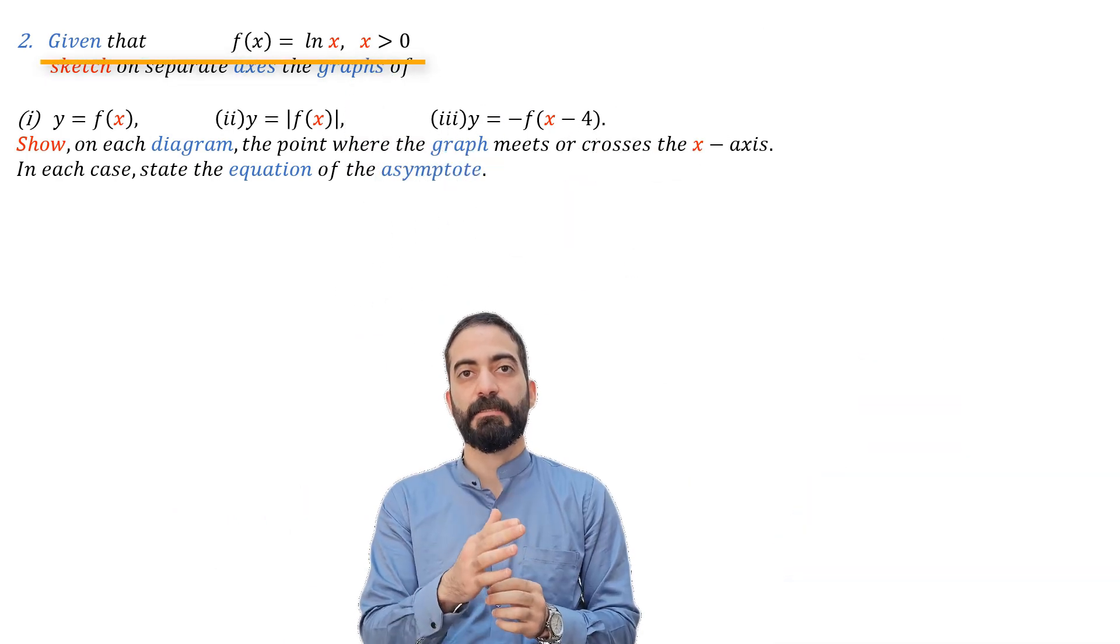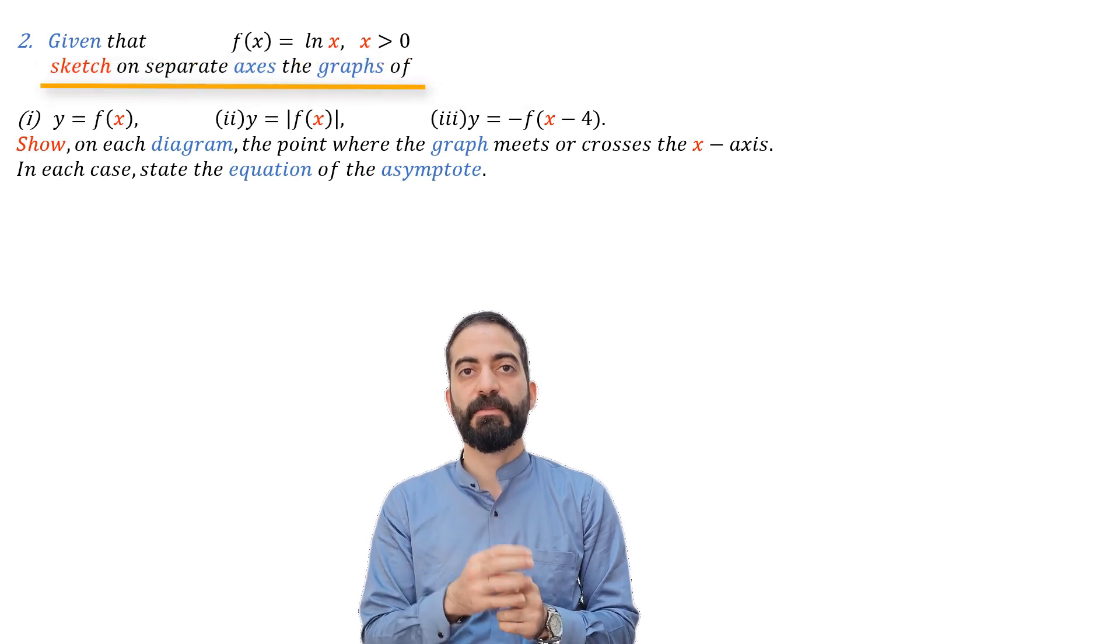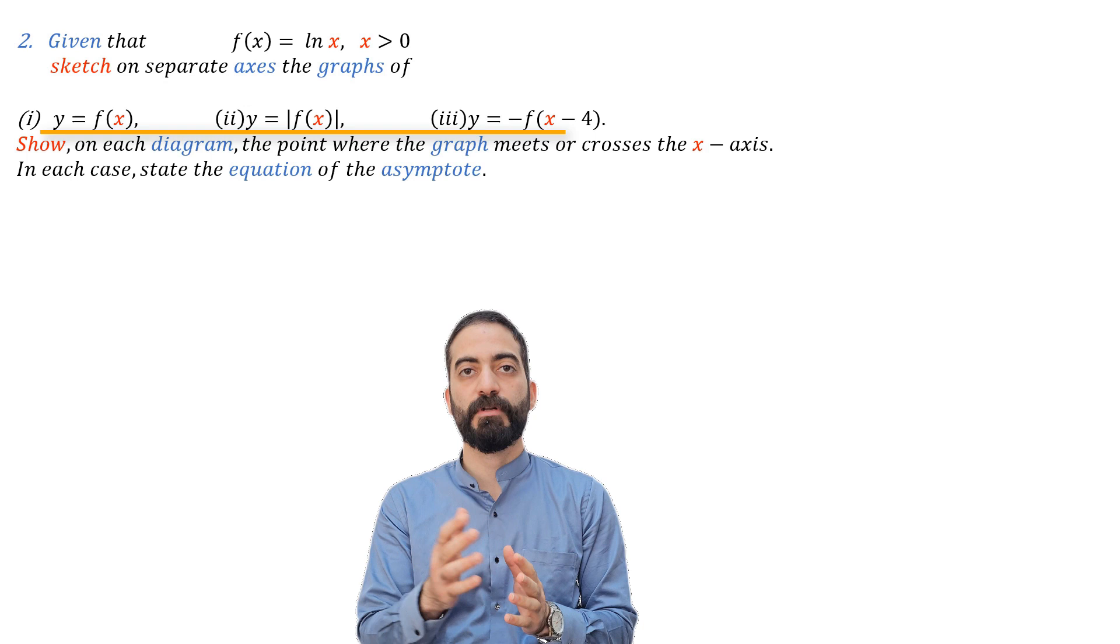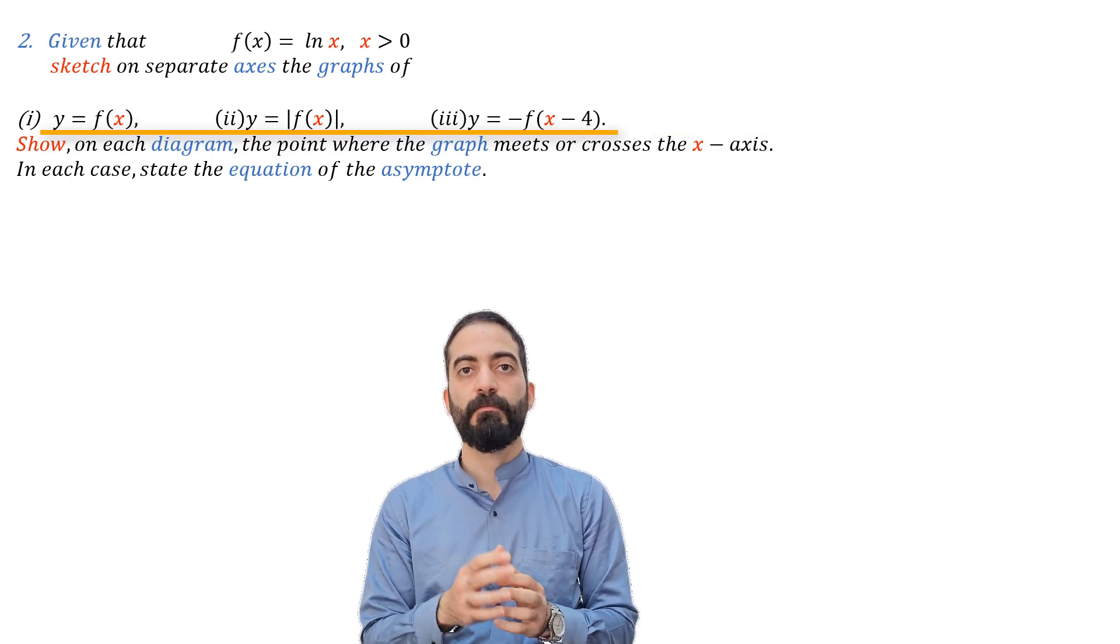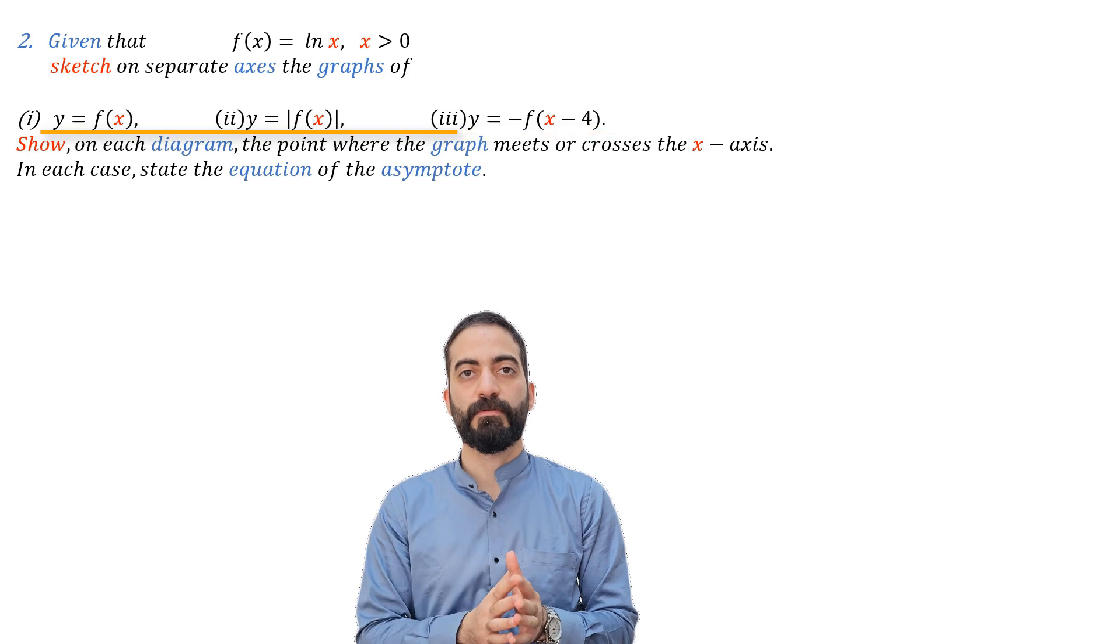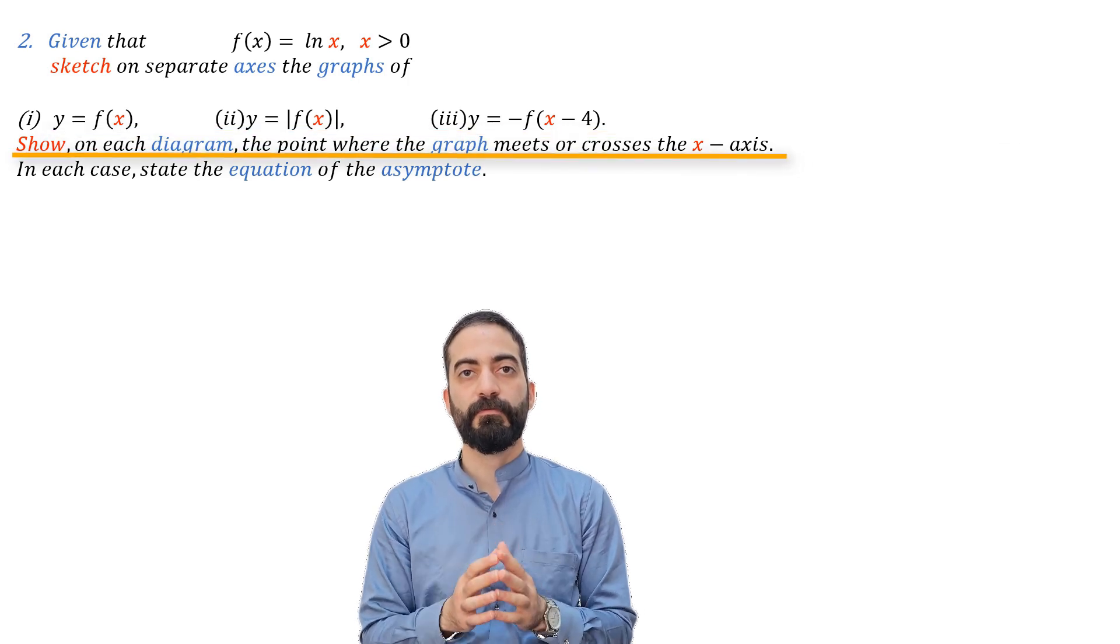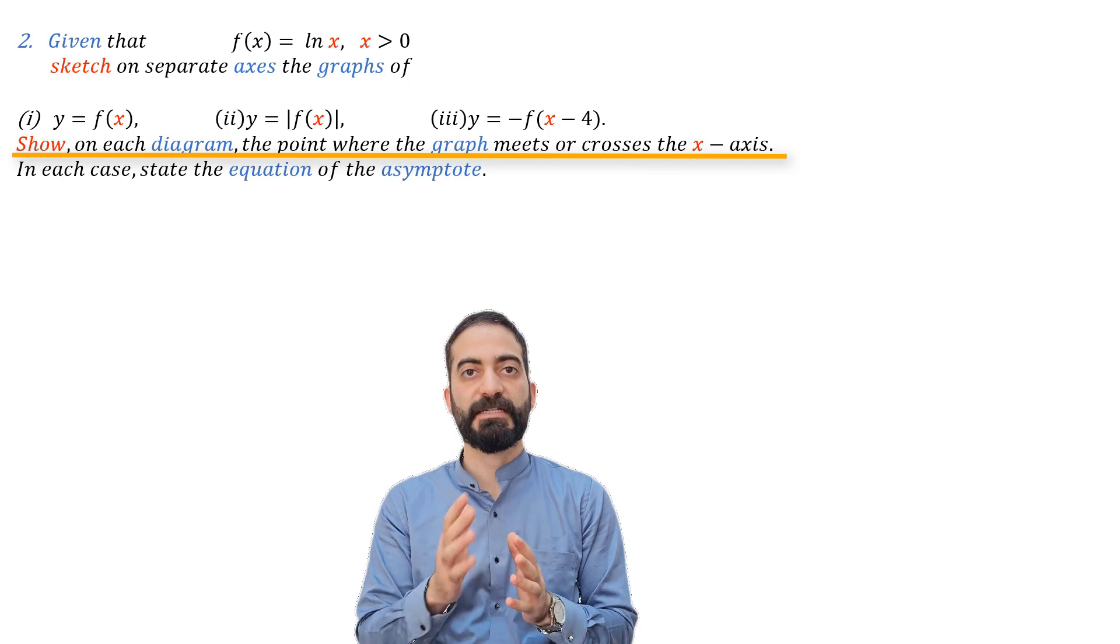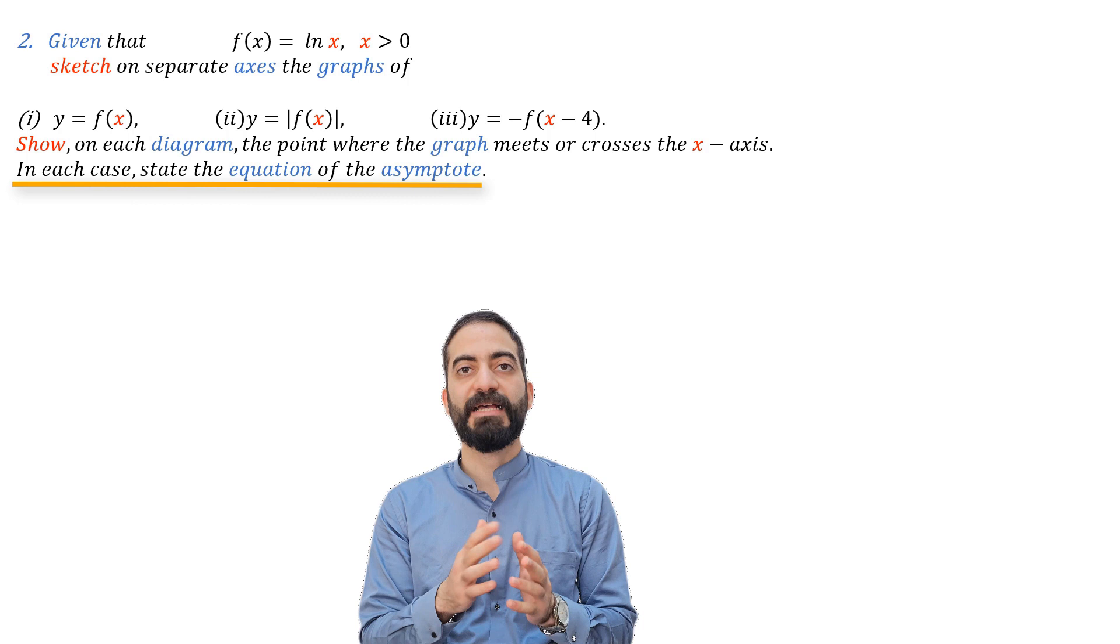Given that f(x) equals ln(x), x larger than 0, sketch on separate axes the graphs of y equal f(x), y equal absolute value of f(x), and y equal minus f(x minus 4). Show on each diagram the point where the graph meets or crosses the x-axis. In each case, state the equation of the asymptote.